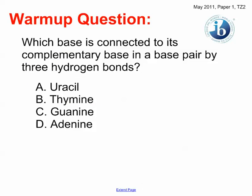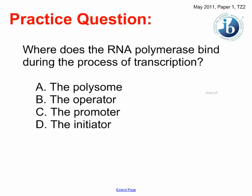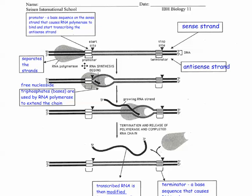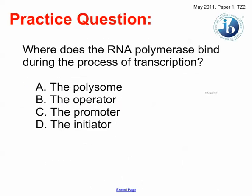So quick question, pause right here if you don't want me to tell the answer really quick. So which base is connected to its complementary base in a base pair by three hydrogen bonds? Just trying to remember these. A and T make two hydrogen bonds, C and G make three hydrogen bonds. A and T, two hydrogen bonds, no. U is a replacement for T, so no. So the answer has to be C for this one. Another quick question, where does the RNA polymerase enzyme bind during the process of transcription? It is going to bind at the promoter sequence right there. The promoter.